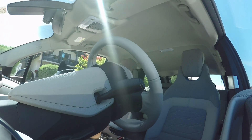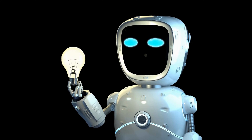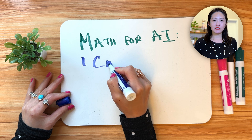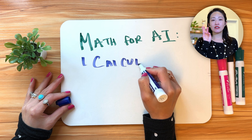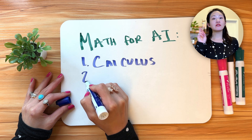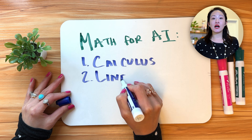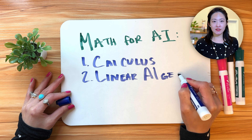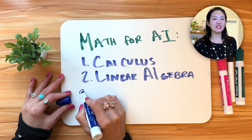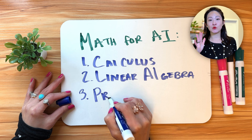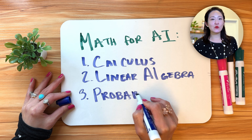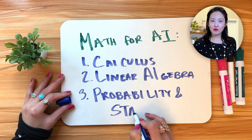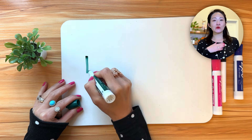AI is powered by math, but you don't need to be a math genius. Just focus on these three areas: calculus, linear algebra, and probability and statistics. Today I'll show you exactly what each one means with simple real-world examples — no boring textbooks needed.